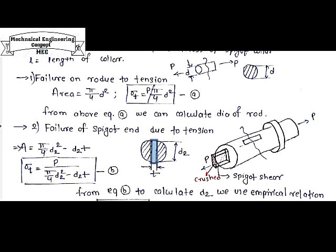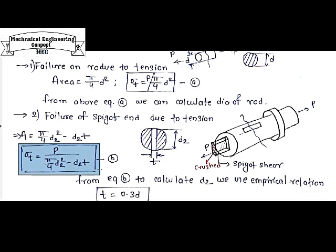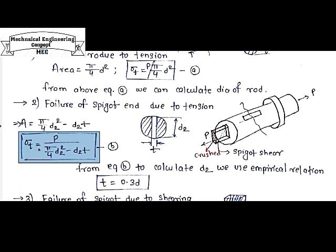Tensile stress sigma_t equals load P divided by the resisting area (pi/4 D2 squared minus D2 times T). This is equation B. From equation B we can calculate D2. However, to calculate D2 we need to know T, and we have two unknowns with one equation.